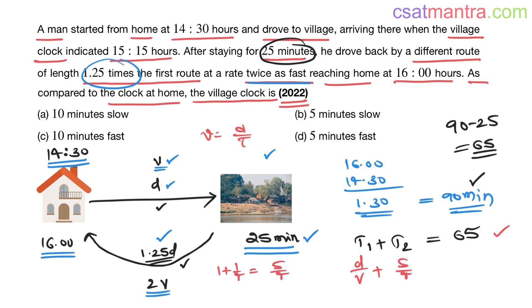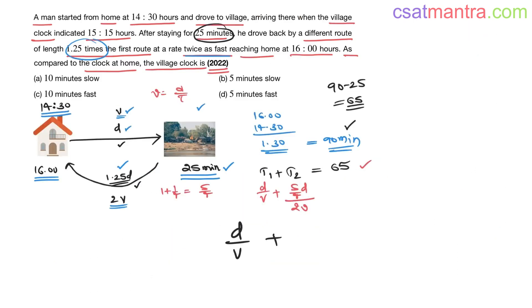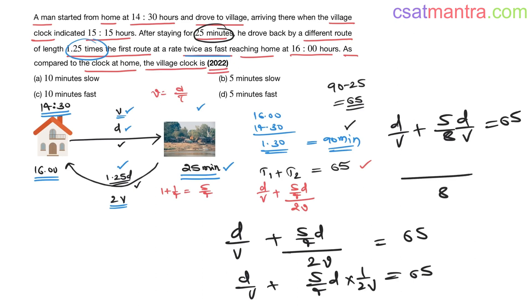5 by 4 D by, what is the speed now? 2V. D by V plus 5 by 4D whole by 2V. This is equal to 65. D by V plus 5 by 4D into 1 by 2V, this is equal to 65. This is D by V plus 5 by 8 D by V equals 65. LCM 8, 8 plus 5, 8D plus 5D, that is equal to 65. 13D by 8V is equal to 65.